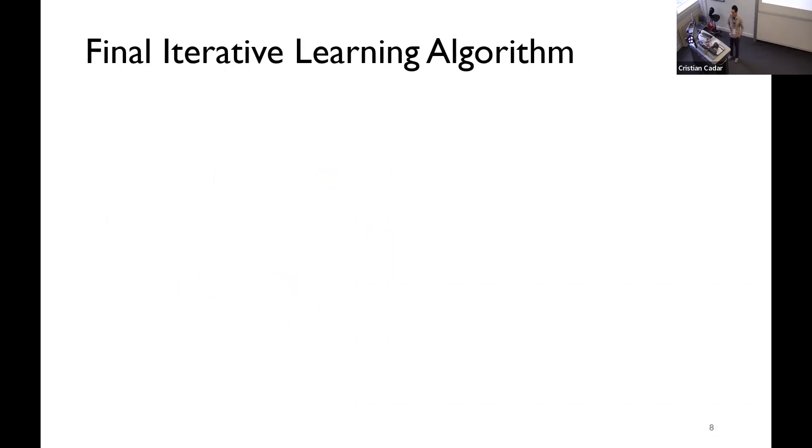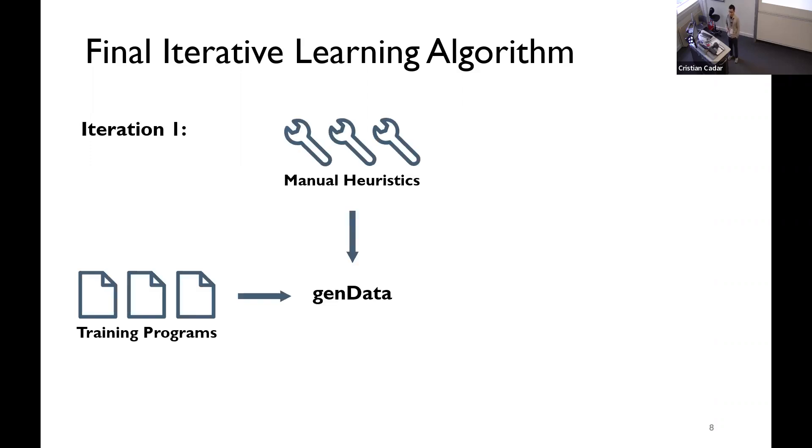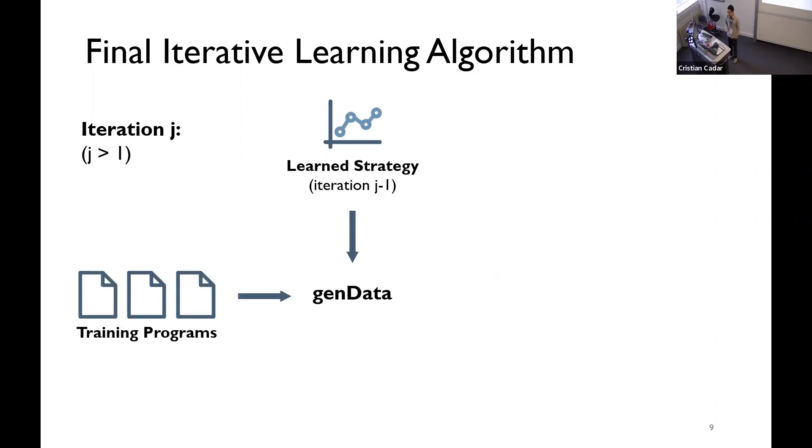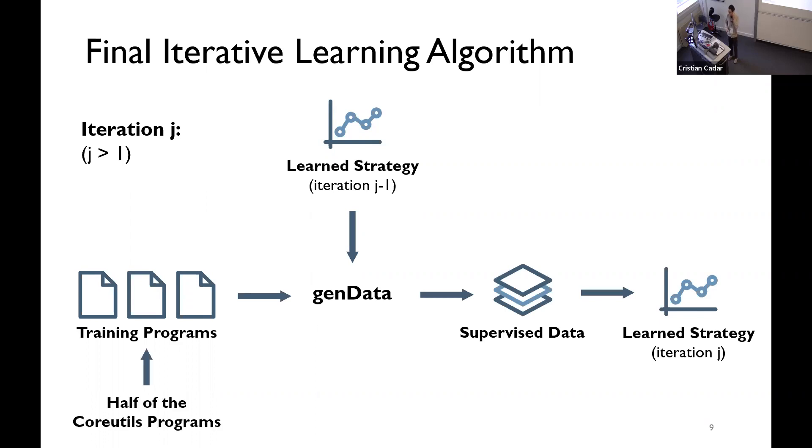We can actually use this GenData algorithm for multiple iterations. For the first iteration, we run GenData on a set of training programs and on some existing manually designed, expert designed heuristics. We generate some supervised data. And, we can learn a strategy. At future iterations, we can generate more data with the already known strategy from previous iteration. And, then we can learn another strategy. What we do in the end is that we use n number of these strategies. We have four strategies, four known strategies. We divide the total time by four, and for each part, we use one of these known strategies.